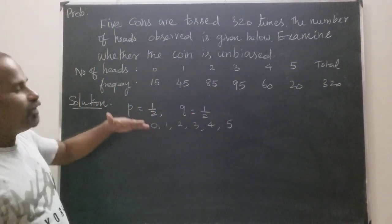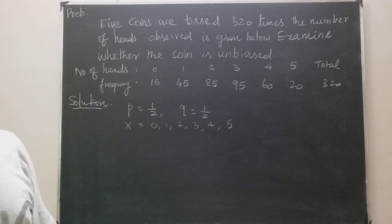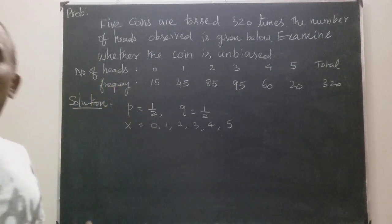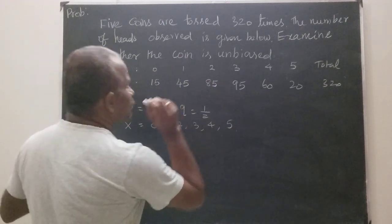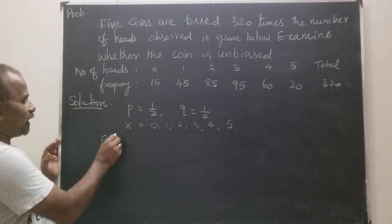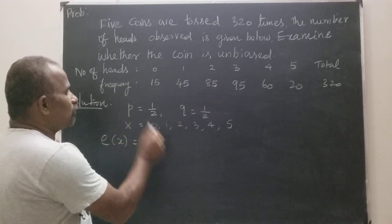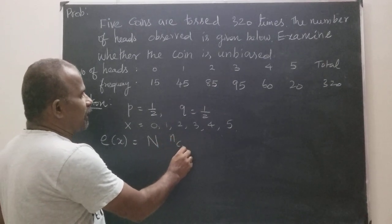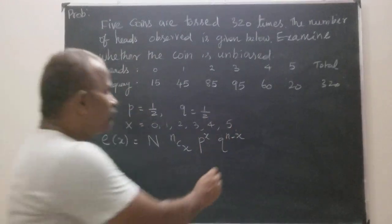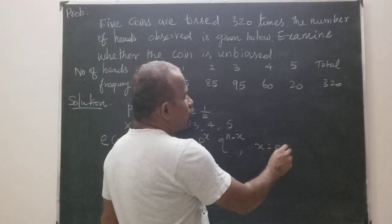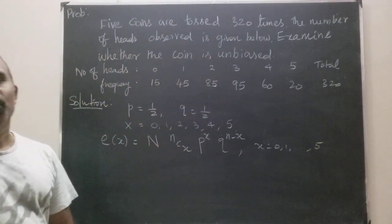Our aim is to construct the theoretical frequencies — that is, the expected frequencies E(x). The formula is E(x) = N · nCx · p^x · q^(n−x), where x = 0, 1, 2, up to 5. This is the PDF of a binomial distribution.